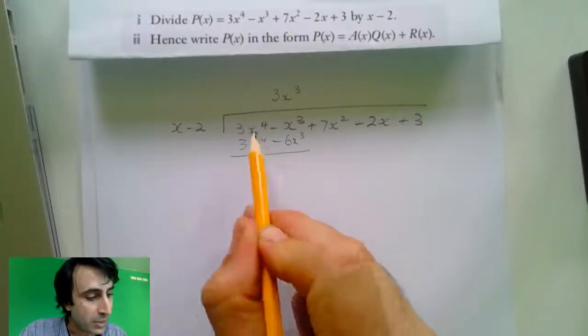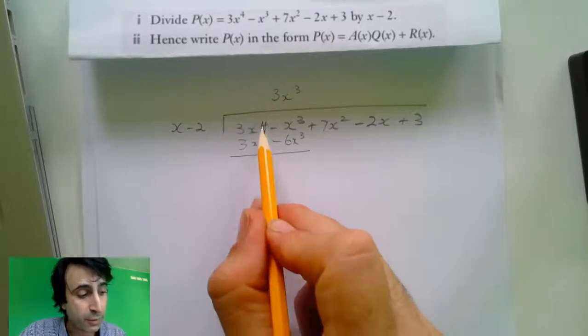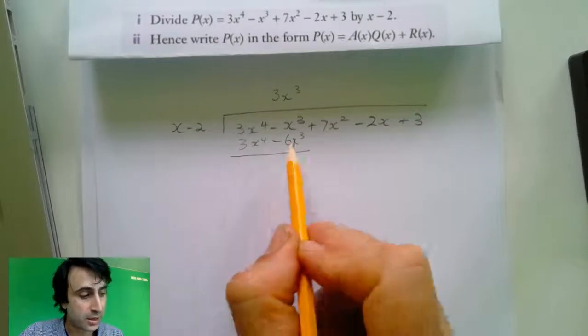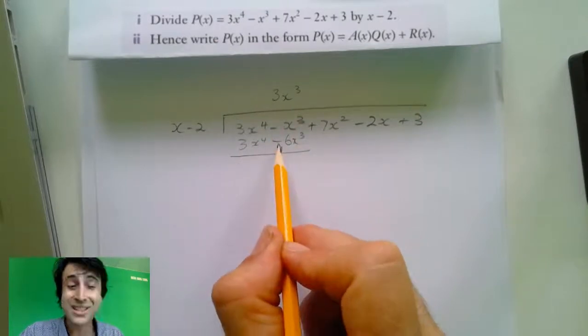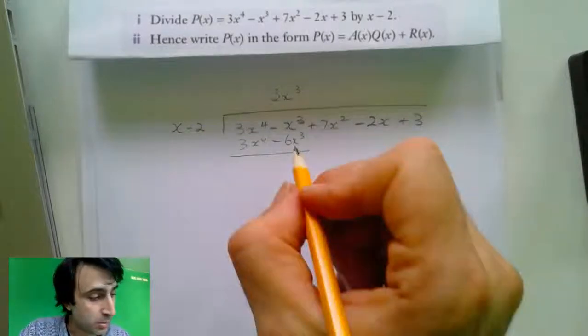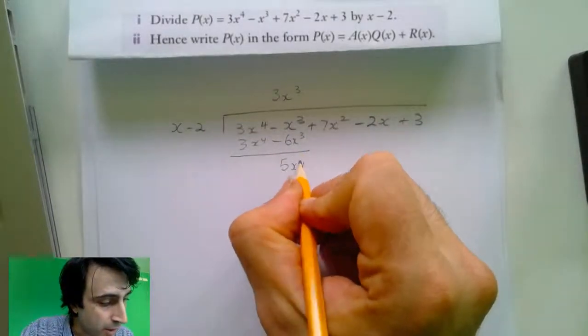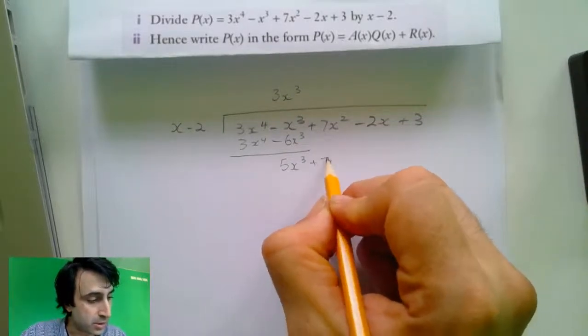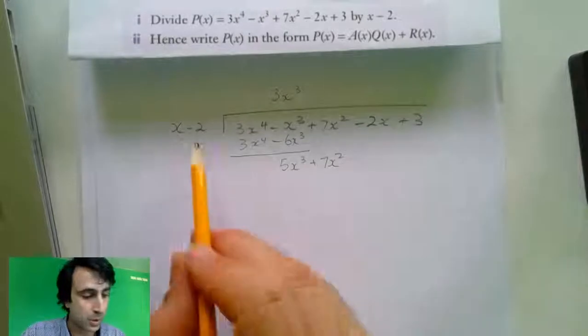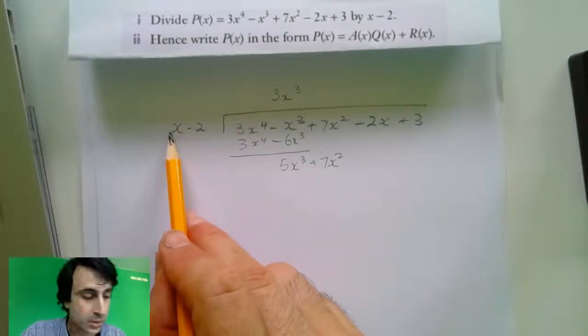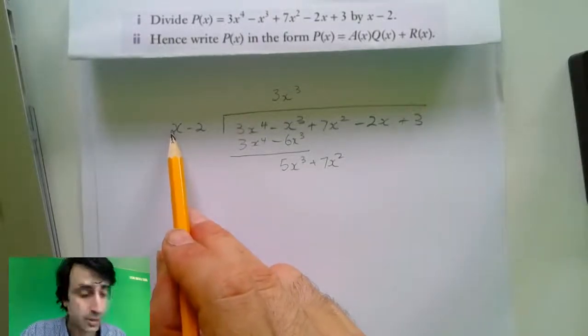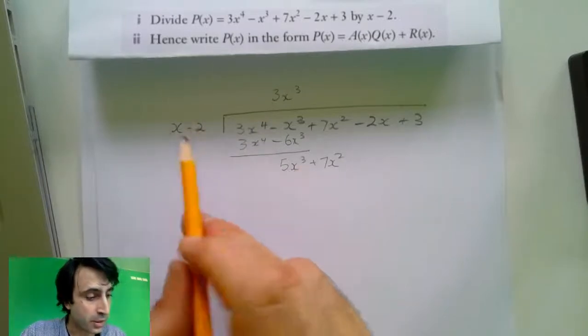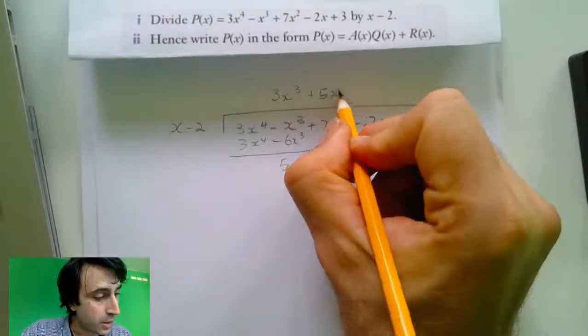We rule a line and we subtract the second line from the first. So 3x to the power of 4 minus 3x to the power of 4 is nothing, minus x cubed minus negative 6x cubed equals 5x cubed. And we bring this term down, 7x squared. And we do the same thing. We look at x, the biggest order, or should I say the highest degree in the divisor, 5x cubed divided by x equals 5x squared.